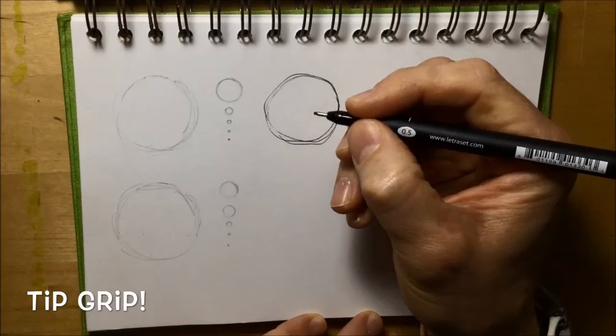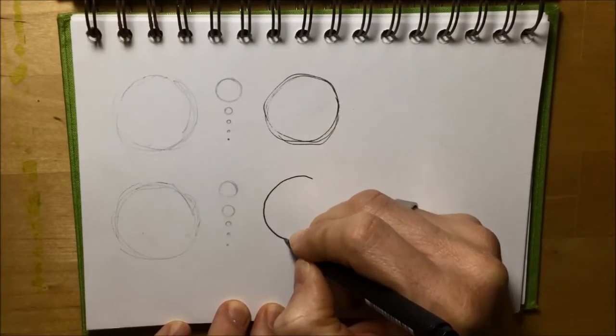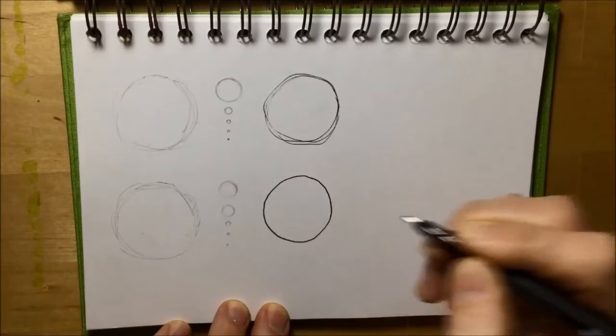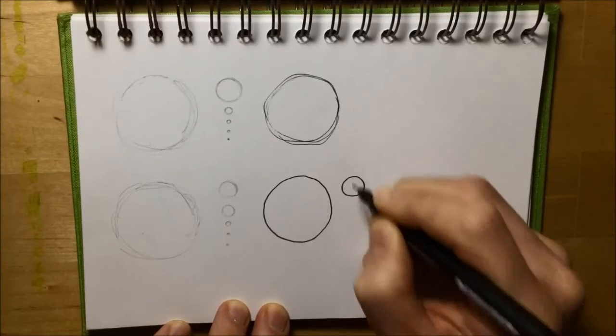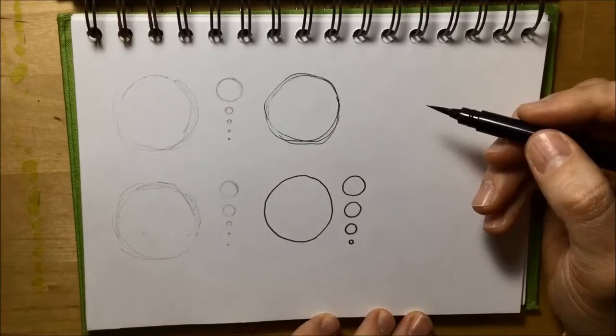But most of the time I hold it in the tip grip, so I'm looking for that nice uniform line, good control when I'm using a fine line pen. Here you can see me drawing these little circles. Perhaps I need to practice them a little bit more.